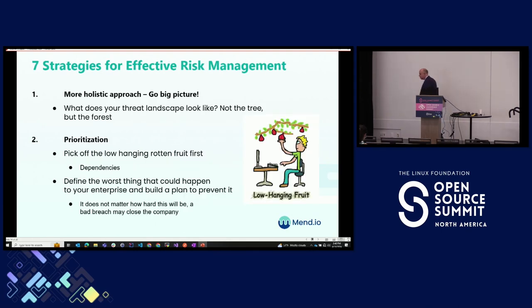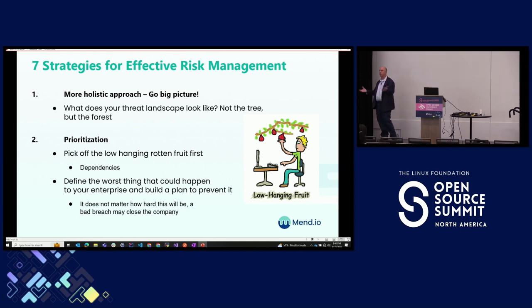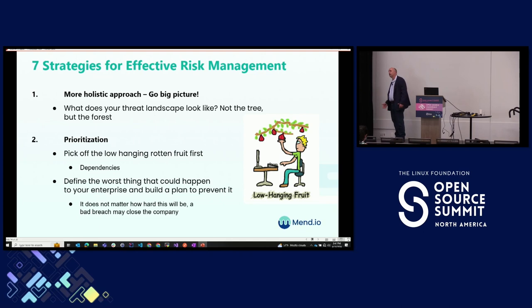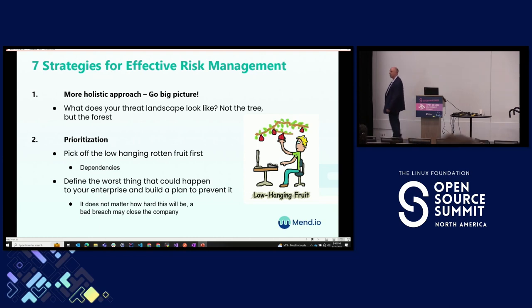I'm going to talk about seven strategies for risk management. First: go big picture. What does the threat landscape look like? Don't look at the trees — too many people get so focused on the trees they don't see the forest. Your very large companies — IBMs, Capital Ones — focus on the forest and sift it all the way down to the developer. Start big, think big, and work down. Prioritization: pick off the low-hanging fruit. What's the easiest thing you can pick off?